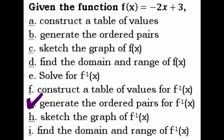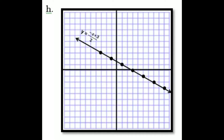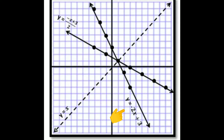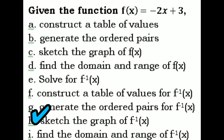Letter H: sketch the graph of f inverse of x. This is the graph of y = (-x+3)/2, with arrowheads on both directions since it can be extended. Combining both graphs: y = -2x + 3 is the original function, and y = (-x+3)/2 is its inverse. The broken line in the middle is the line of reflection or the axis of symmetry, which is y equals x. We're done with Letter H.